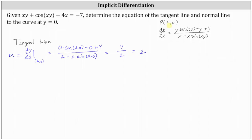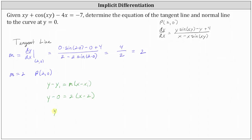The slope of the tangent line is two, and it passes through the point two comma zero. Using the slope of two and the point two comma zero, let's find the equation of the tangent line in point-slope form, which gives us y minus zero equals two times the quantity x minus two. Solving for y, we have y equals two x minus four. This is the equation of the tangent line.